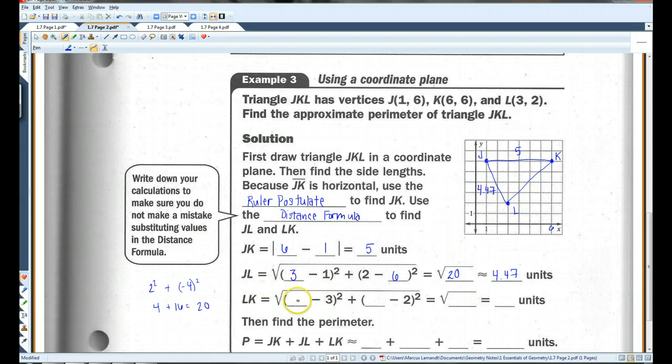LK, we're going to do pretty much the same thing. We've got 6 minus 3 squared plus 6 minus 2 squared. 6 minus 3 is 3 squared. 6 minus 2 is 4 squared. We've got 9 plus 16, which is 25. The square root of 25, of course, is 5. So, now we have the lengths of all three sides.